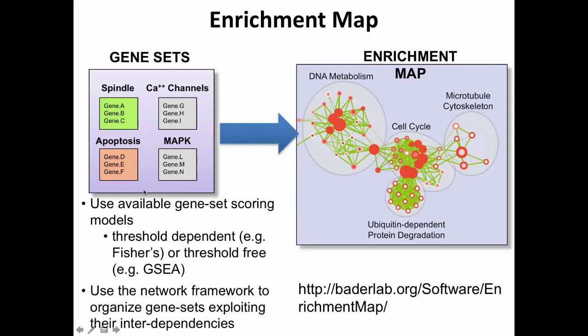What we've done with the enrichment map is we took the network concept I just talked about and we're visualizing the results of the enrichment analysis as a network. Why would we do that? Because we can see the relationships between the pathways and we can see patterns that would otherwise be hard to see as a table.